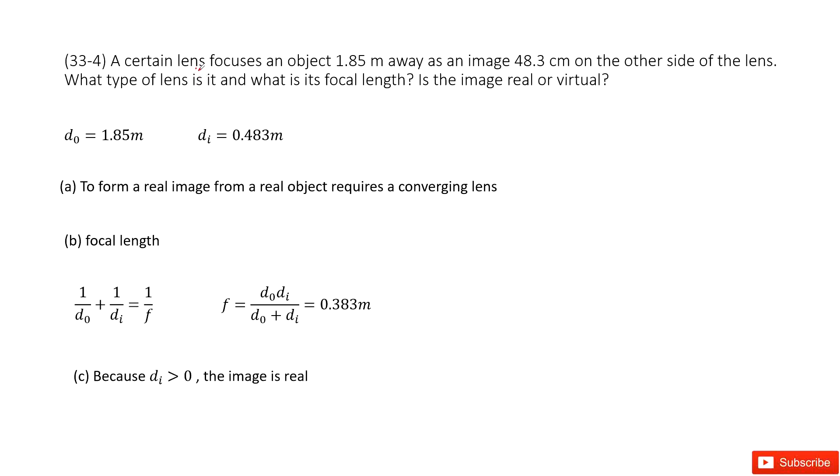Now you can see we have a lens. The given quantities are d_o, the object distance, and d_i, the image distance. We need to take care here. It shows us the image distance on the other side of the lens, which means d_i is positive.